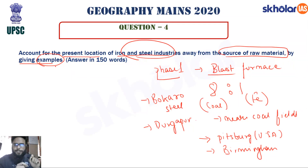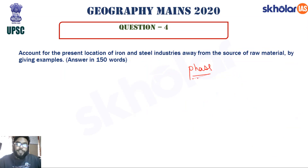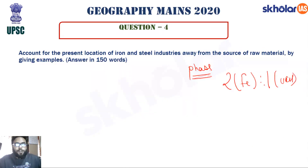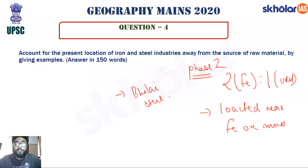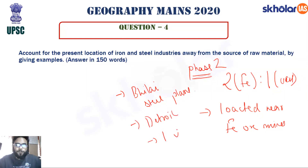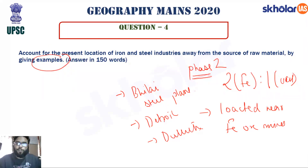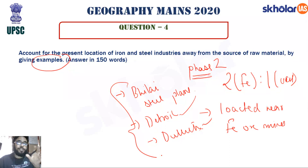Phase 2: As technology improved, the ratio changed to 2 parts of iron to 1 part of coal. As a result, iron and steel industries relocated near iron ore mines. Indian examples include Bhilai Steel Plant in Chhattisgarh and Bhadravati Steel Plant. International examples include Detroit and Duluth in the USA. Along with explaining each phase, you must also provide examples — this is very important for scoring marks.